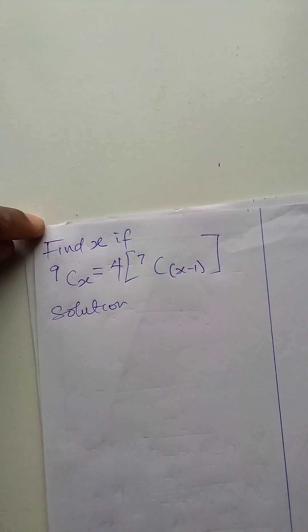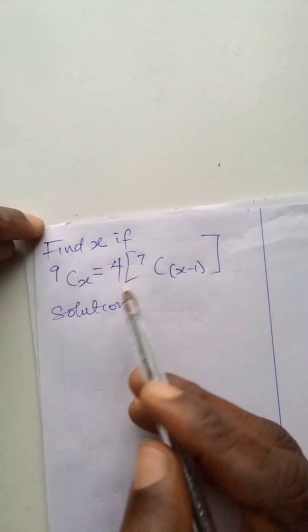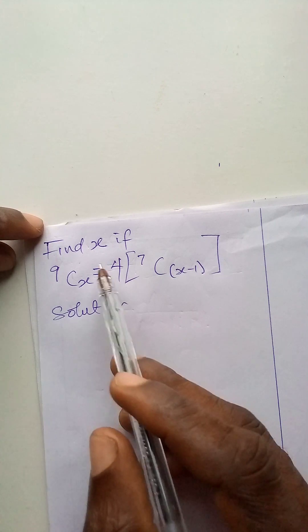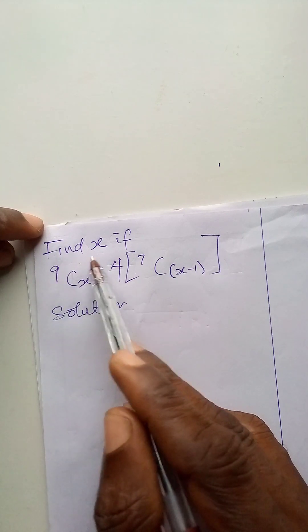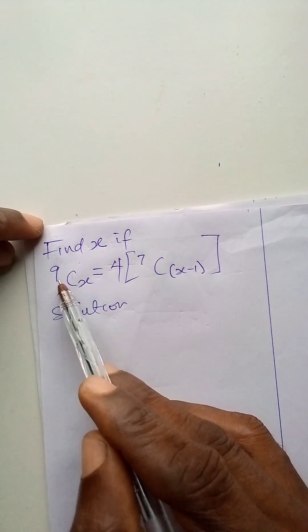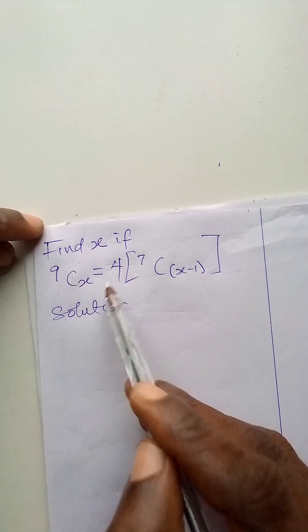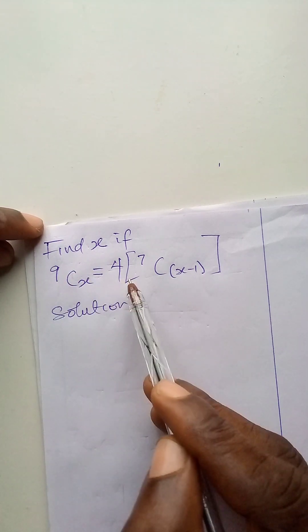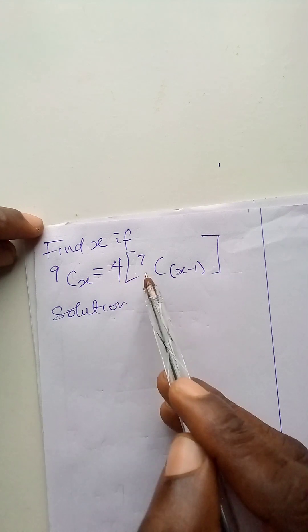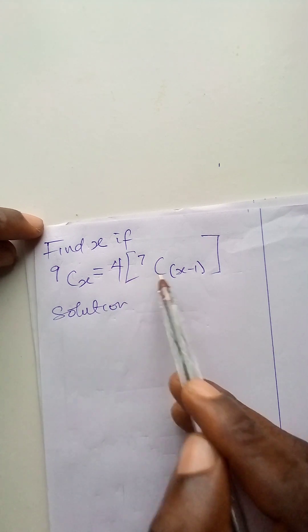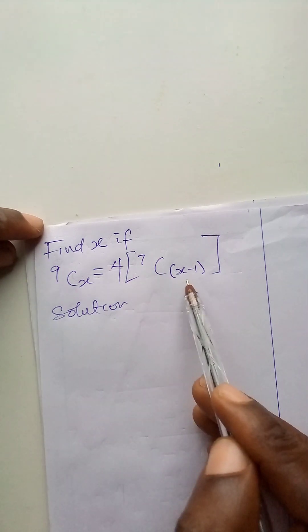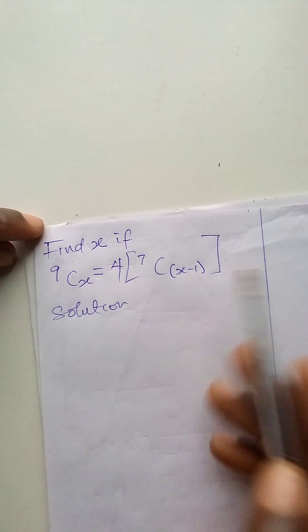Welcome to my channel. In today's question, we are asked to find the value of x if 9 combination x is equal to 4 bracket 7 combination x minus 1.